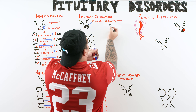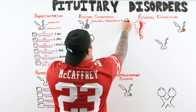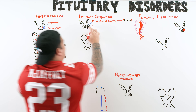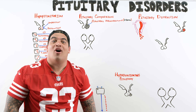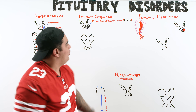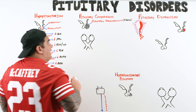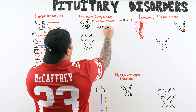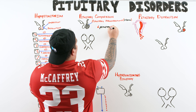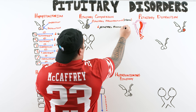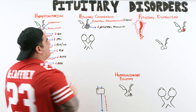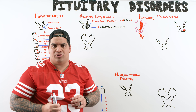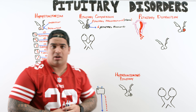A macroadenoma is an abnormal pituitary tumor defined as greater than 10 millimeters. This tumor compresses the pituitary tissue, reducing its ability to produce hormones, resulting in a drop in pituitary hormone levels.